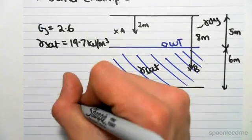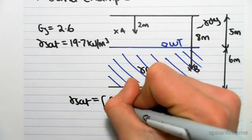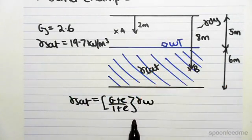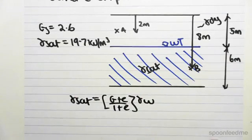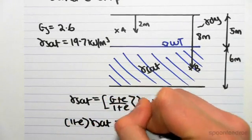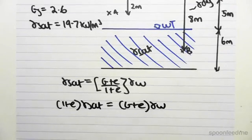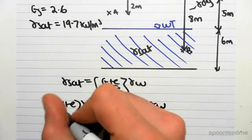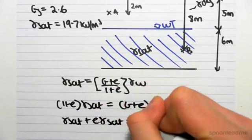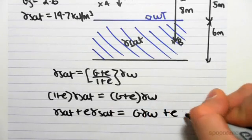We know that gamma sat equals (G + E) / (1 + E) times gamma W. So what we're going to do is find E. If we rearrange this, we get (1 + E) × gamma sat equals G + E times gamma W. We can then expand this to get gamma sat + E × gamma sat equals G × gamma W + E × gamma W.